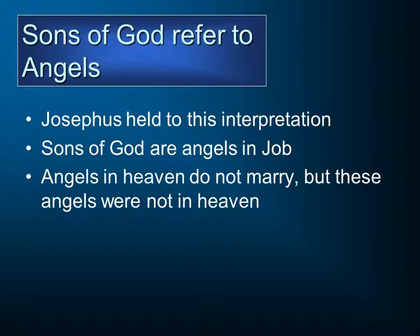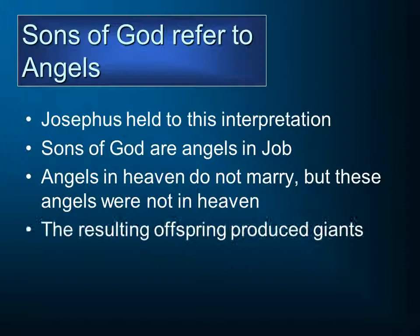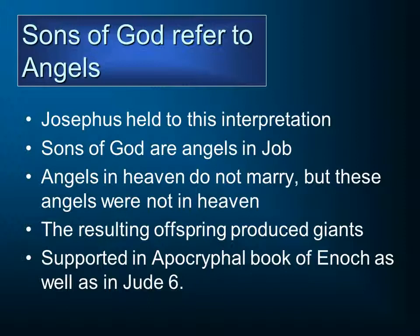On the other hand, angels in heaven don't marry, but these angels are not in heaven. So it might be that the sons of God come and intermarry with the daughters of men — that's the theory being presented here. The resulting offspring, according to the theory, produce giants, although it's not entirely clear from the text that that's where they come from. This view is also supported in the apocryphal book of Enoch, and it seems to be supported in Jude verse 6. I'm not sure that I take the apocryphal book of Enoch as authoritative, but it is quoted in the book of Jude.